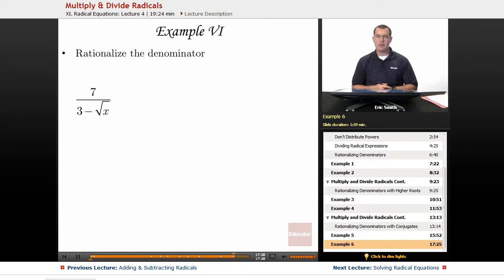Last example, let's look at rationalizing the denominator. We have 7 divided by 3 minus the square root of x.